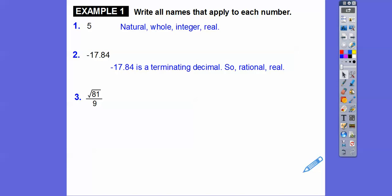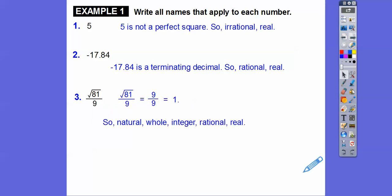Now this one here — the square root of 81 is 9, and 9 over 9 equals 1. Well, that's an integer. It's also a natural number, also a whole number, and also a real number. So it's natural, whole, integer — 1 is an integer — it's a rational number because it's 1 over 1, and it's also a real number.